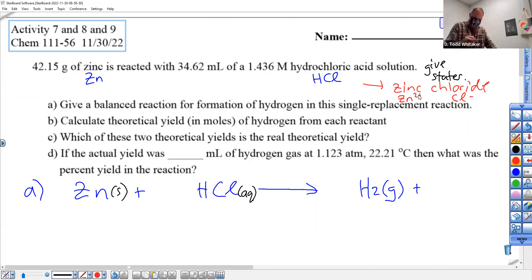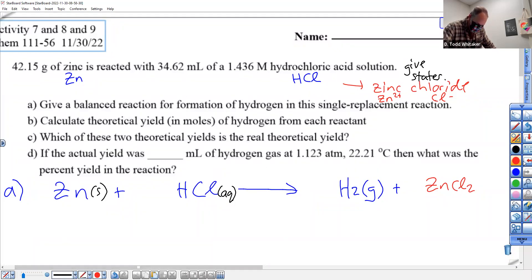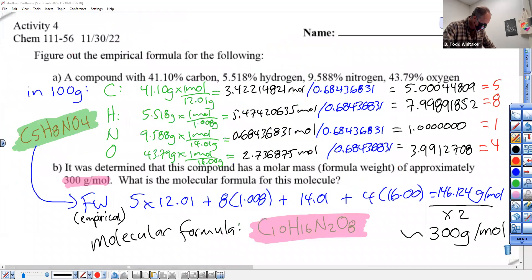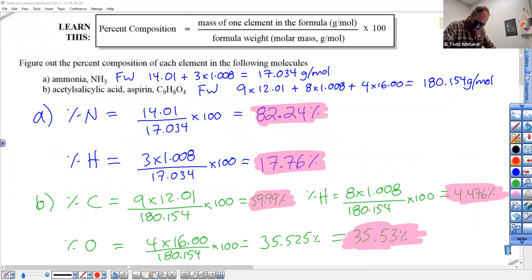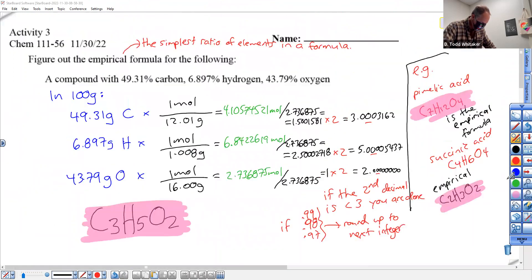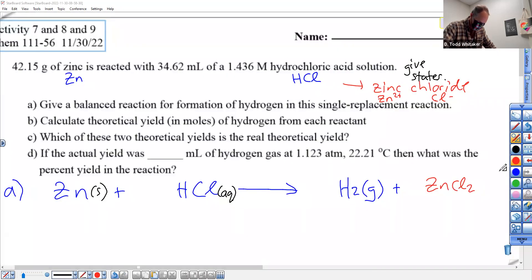So, what's the formula for zinc chloride? Do a crossover on zinc 2 plus and Cl minus. ZnCl2. And solubility table would be an activity we did last week. Zinc chloride is aqueous. I'm not asking about a precipitate, am I?